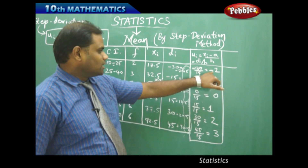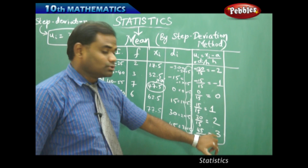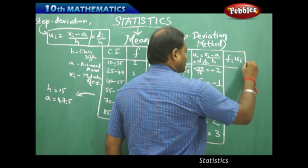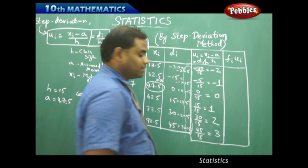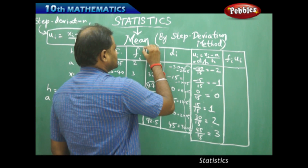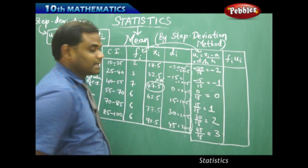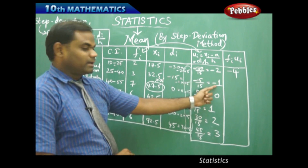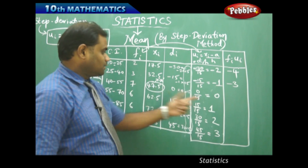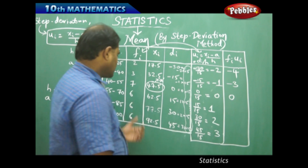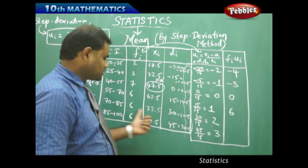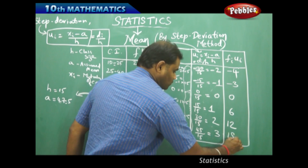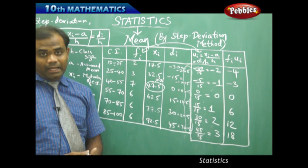So each of the ui values are: minus 2, minus 1, 0, 1, 2, 3. Next, we calculate fi × ui for each row. 2 times minus 2 is minus 4; 3 times minus 1 is minus 3; 7 times 0 is 0; 6 times 1 is 6; 6 times 2 is 12; and 6 times 3 is 18.